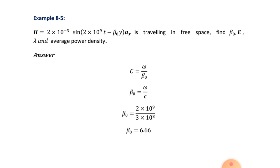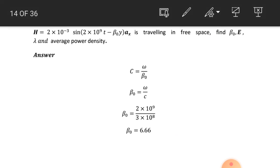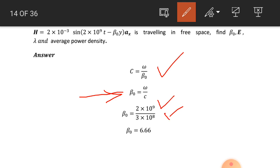This is example number 8.5, also related to free space. The magnetic field intensity is known and is traveling in free space. Find beta_0, the electric field intensity, lambda, and average power density. Using c equals omega by beta_0, so beta_0 equals omega by c. Omega is 2 into 10 raised to power 9 and c is 3 into 10 raised to power 8. So beta_0, the phase constant in free space, is 6.66.